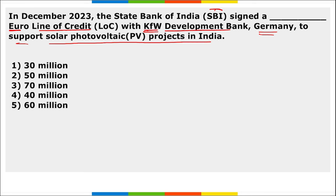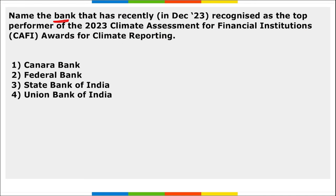Next: SBI signed a 70 million euro line of credit with KfW Development Bank of Germany to support solar photovoltaic projects in India.